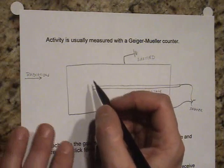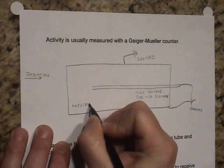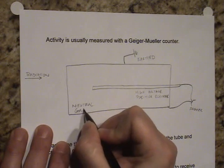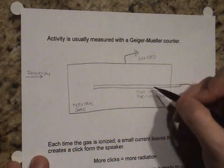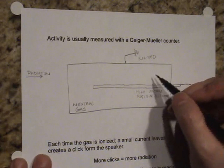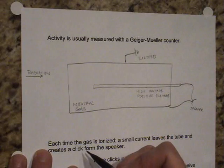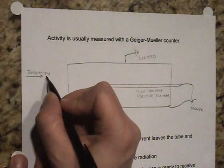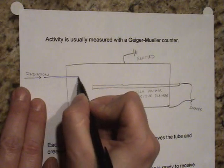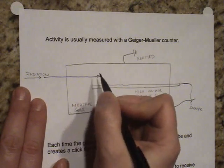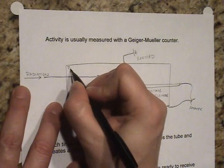So what ultimately happens is this is filled with a neutral gas. Because the gas is neutral it doesn't do anything in this very high potential, this high voltage electric field that exists between the wire and the tube on the outside, the metal tube. So what happens is the radiation comes in. And as the radiation enters, it ionizes the gas.